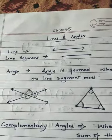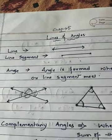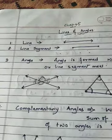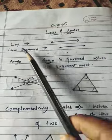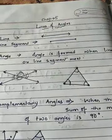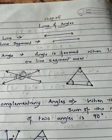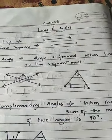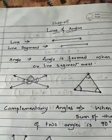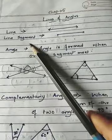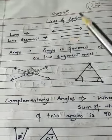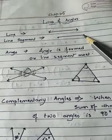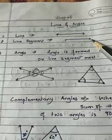Hello students, today we'll start Chapter 5: Lines and Angles. There are some things we have to know before we get on with the exercise. Number one: Line. A line in geometry is defined as a figure which can be drawn endlessly to both sides and which has no thickness. Number two: Line Segment. A line segment is a part of a line, but it has two distinct end points.